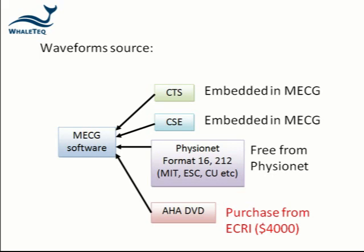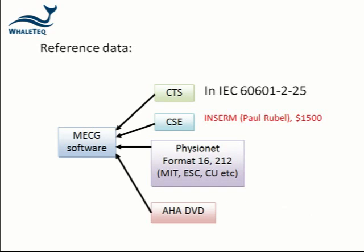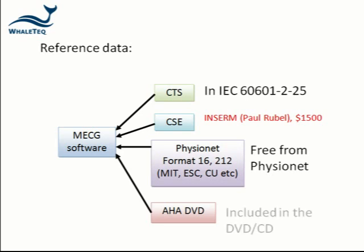The reference values for the CTS waveforms are available in the standard. For CSE, it's necessary to purchase it from INSERM at a cost of $1,500. PhysioNet reference values are available again for free, while for the AHA it's included in the DVD.